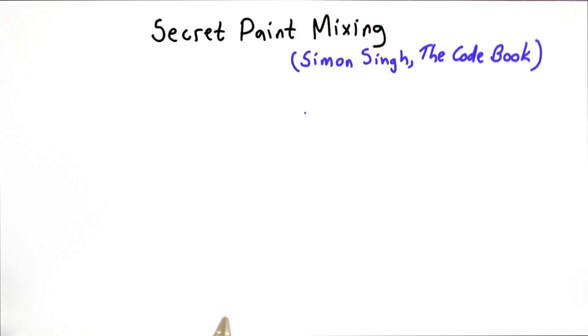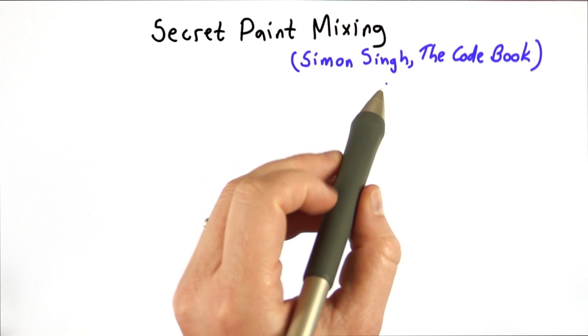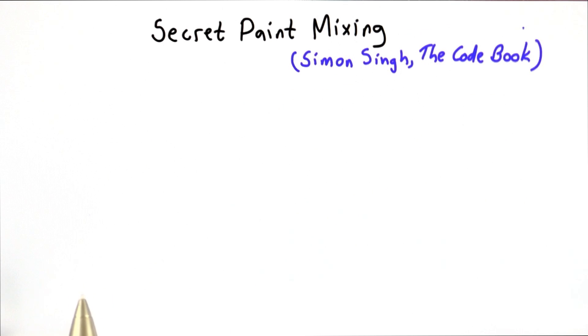Before describing it mathematically, I'm going to describe it as an analogy to paint mixing. This analogy comes from Simon Singh from The Code Book, which is a really fun book about the history of cryptography.